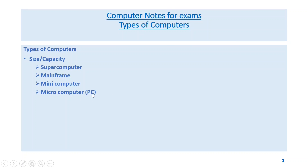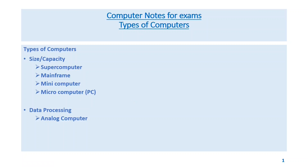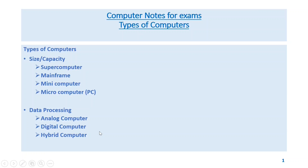Microcomputer is the PC or personal computer. Based on data processing capabilities, computers can be classified as analog computer, digital computer, and hybrid computer.